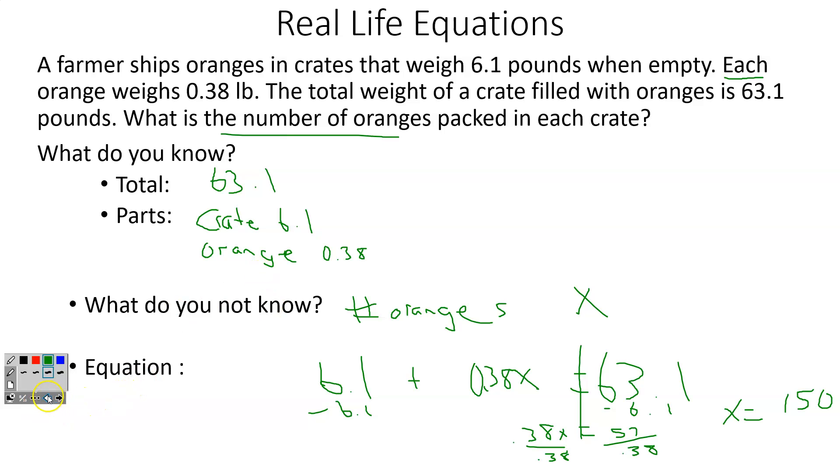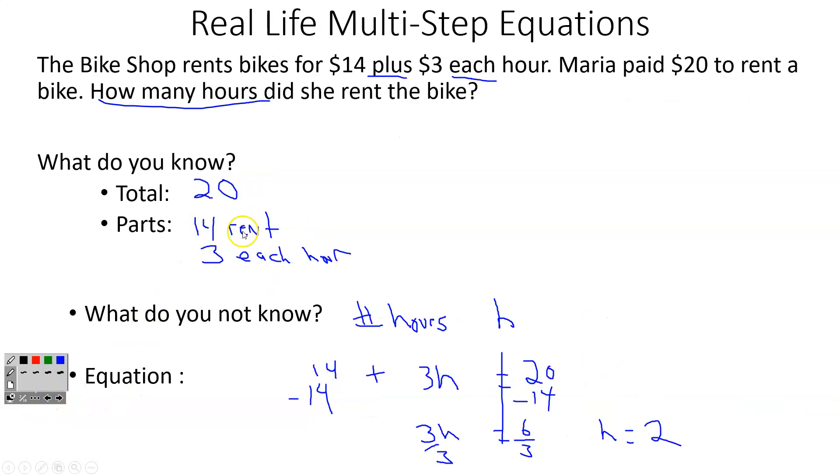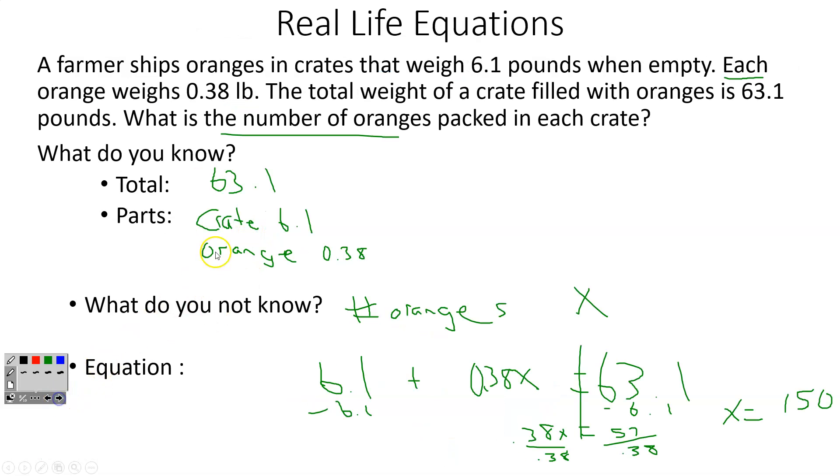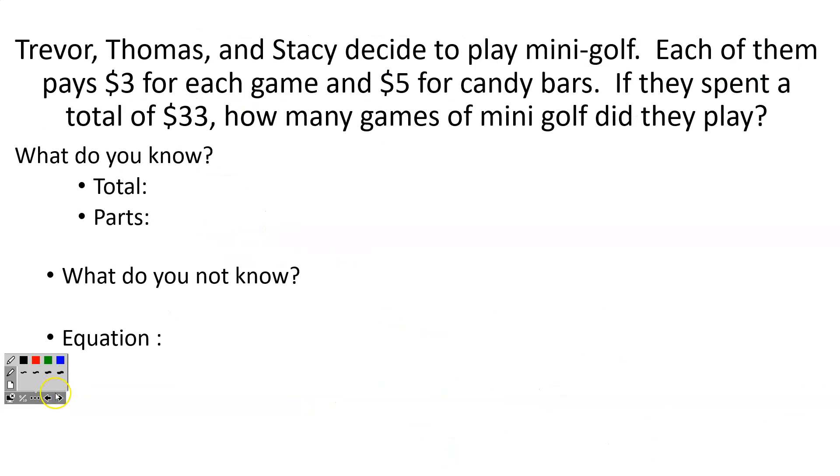So as you've noticed on the last two problems, we've had two parts. So both of these problems have been two-step equations. So what happens if I have more than just two parts? Well, here we go. Trevor, Thomas, and Stacy decide to play mini golf. Each of them pays $3 for each game and $5 for candy bars. If they spent a total of $33, how many games of mini golf did they play?